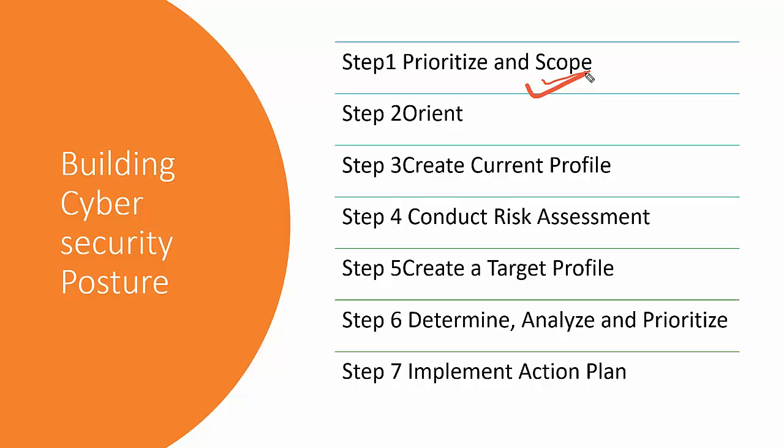From Step 1 we gather key outputs: enterprise architecture vision, organization mission and drivers, organizational direction regarding funding and resources, and — most importantly — an understanding of the enterprise's present and future attitude toward risk and its IT risk position.